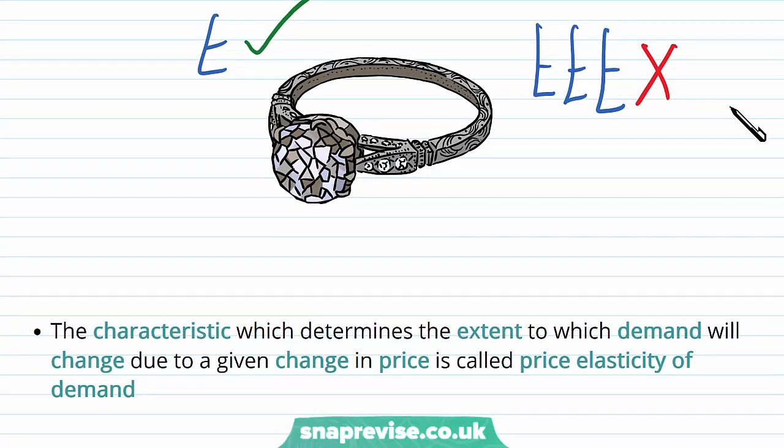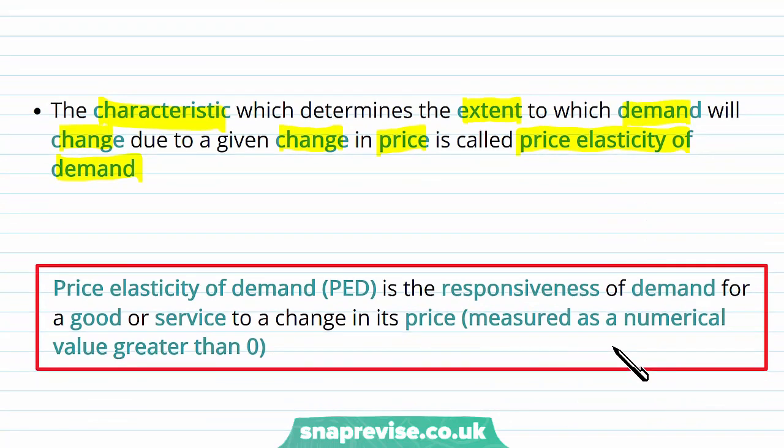The characteristic which determines the extent to which demand will change due to a given change in price is called the price elasticity of demand. The definition of price elasticity of demand, or PED, is the responsiveness of demand for a good or service to a change in its price measured as a numerical value greater than zero.